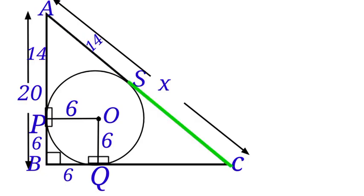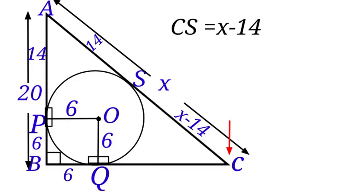For length CS, CS equals to AC minus AS. So AC is X, AS is 14. So CS will be equals to X minus 14. Here, we are going to apply two-tangent theorem at this point again in order to find length QC. This is our external point. CS equals to X minus 14, so QC will also be equals to X minus 14.